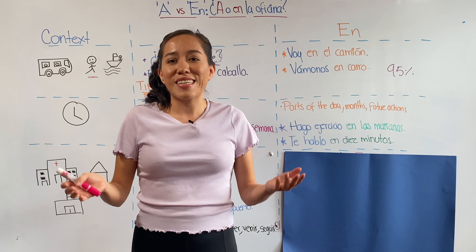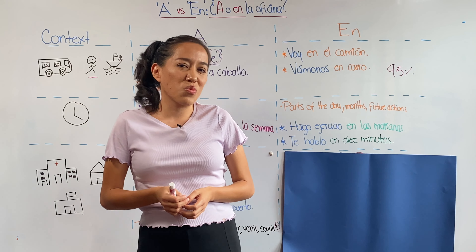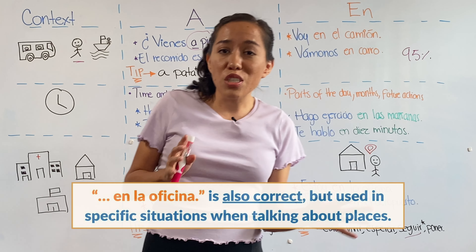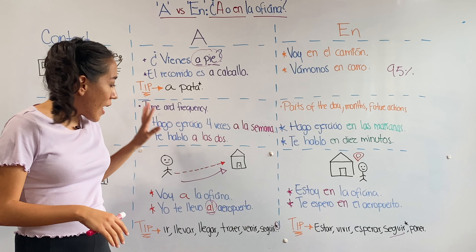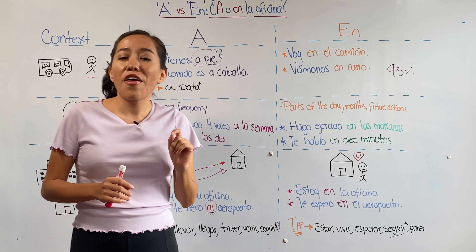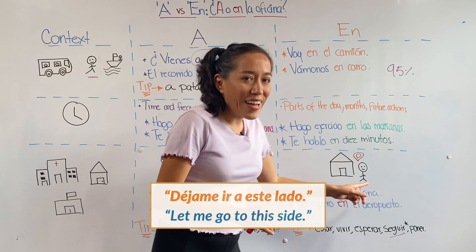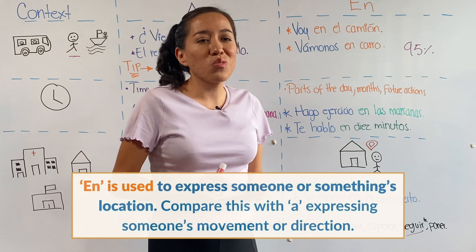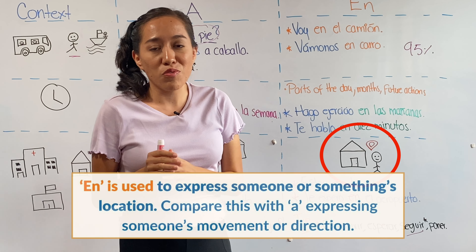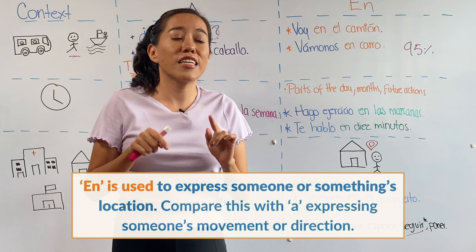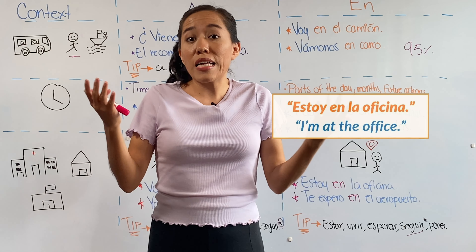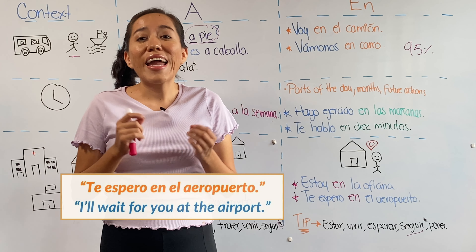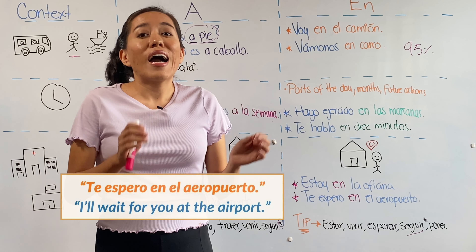What about en? Do we ever say en la oficina? We do, but also in a very specific condition. A expresses movement or direction, however en is going to express location. There is a big difference between going to a place and being in a place. For example, estoy en la oficina — I'm at the office — or te espero en el aeropuerto — I'm going to wait for you at the airport.